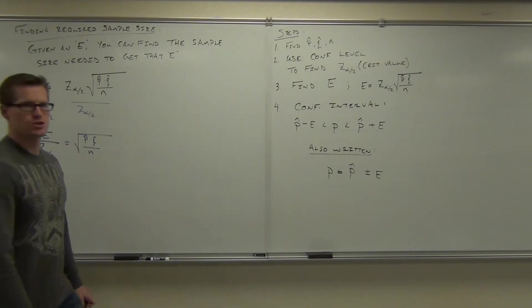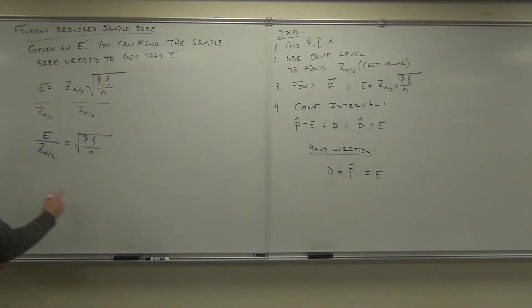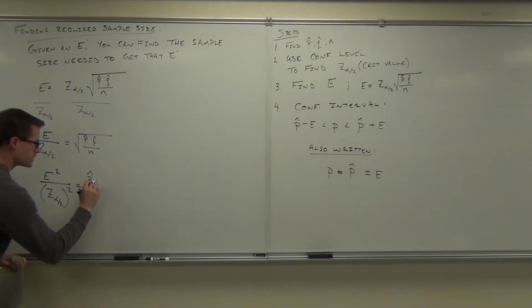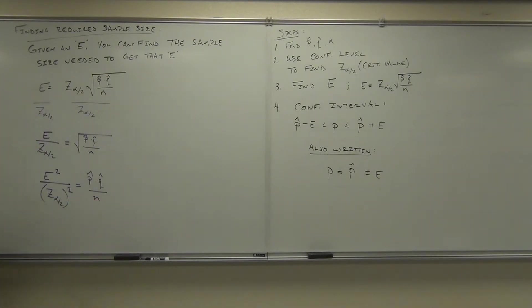Get rid of the square root. What lets you do it? Square both sides. If I square both sides, I'm going to have E squared over Z alpha over 2 squared equals P hat Q hat over N. So far so good?